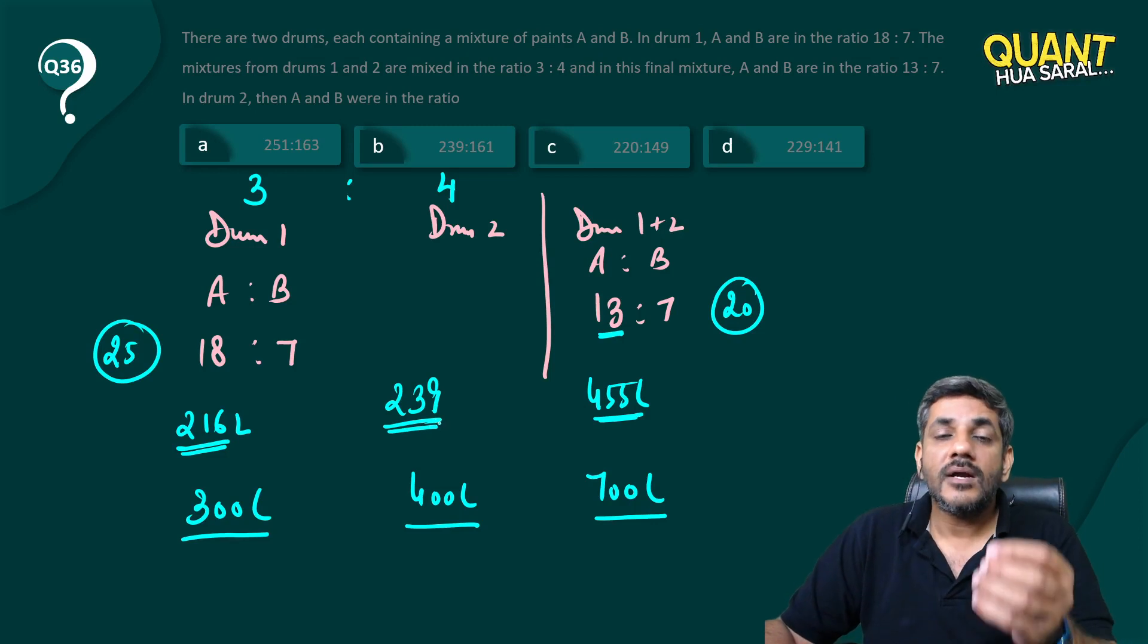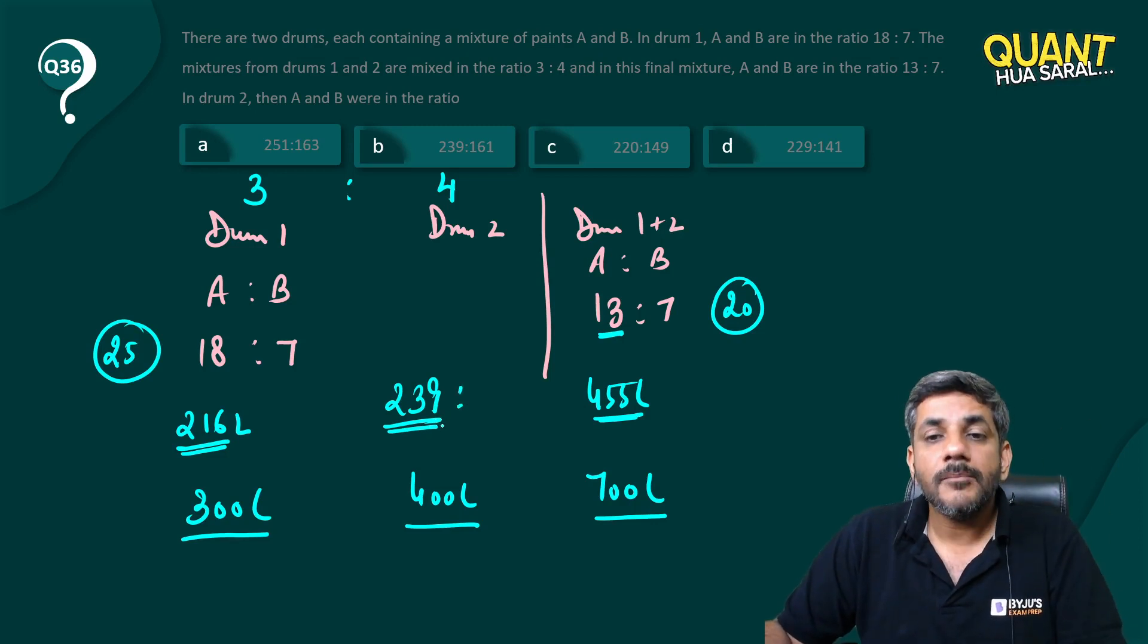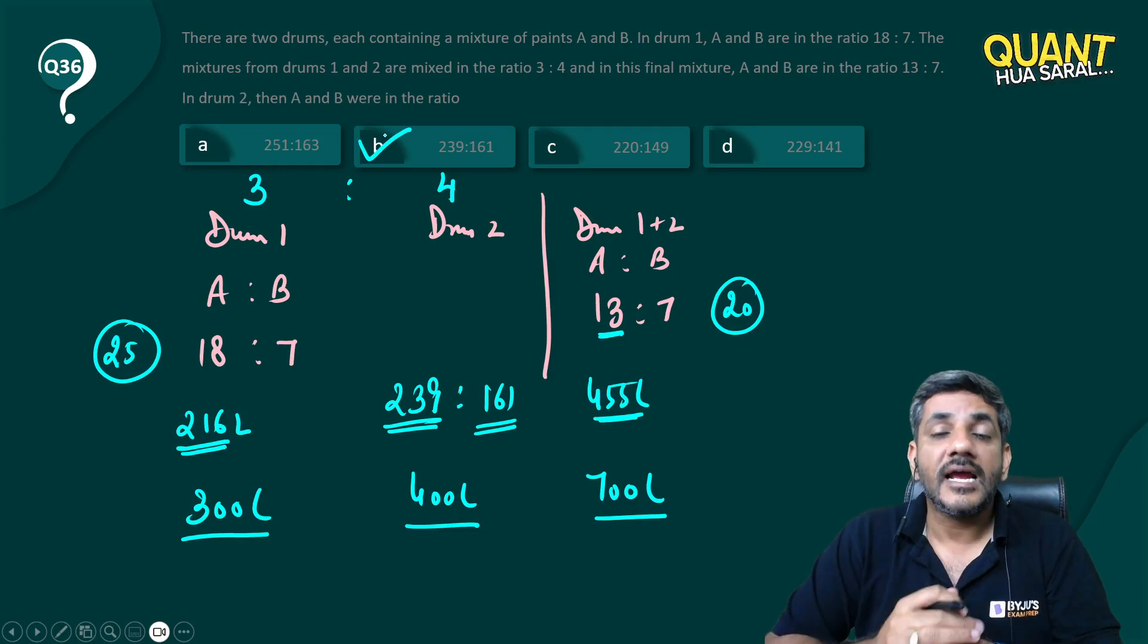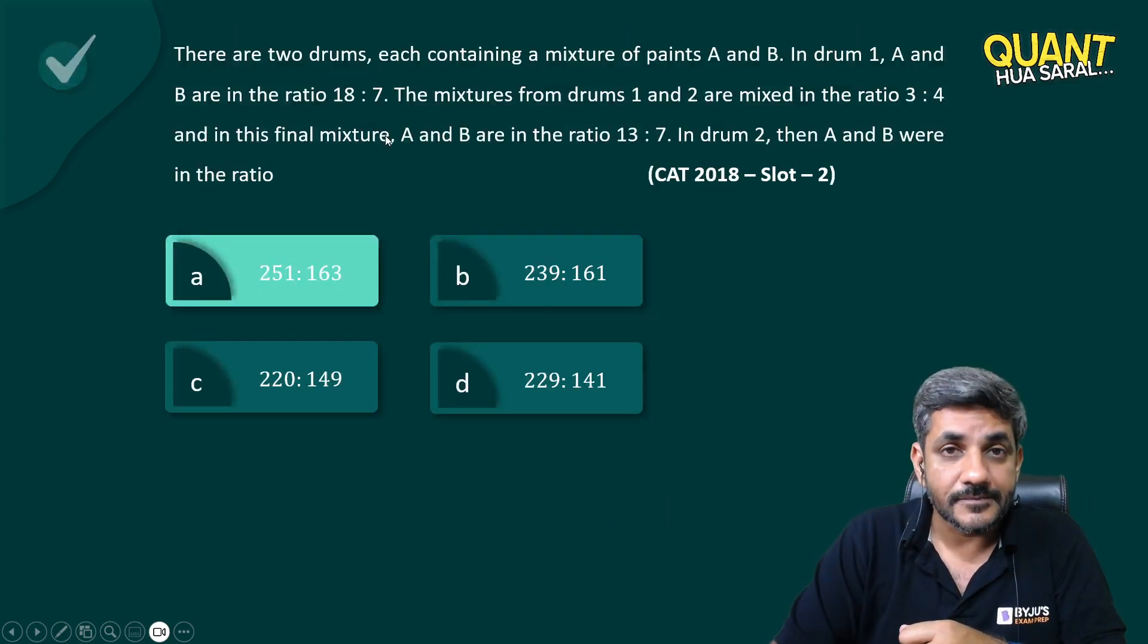And when you subtract it, it gives you 239. So if 239 quantity of A came from drum 2, how much B came from it? 400 minus that, which is 161. And that straightaway gives us the answer as option B, which becomes the right answer for this question.